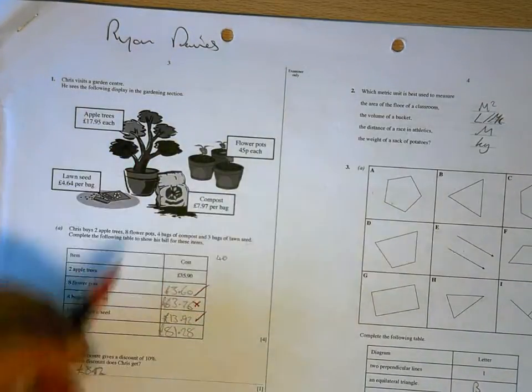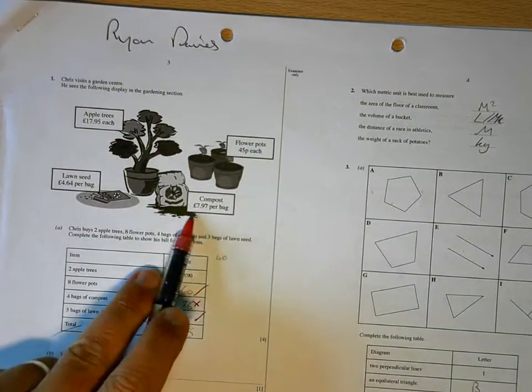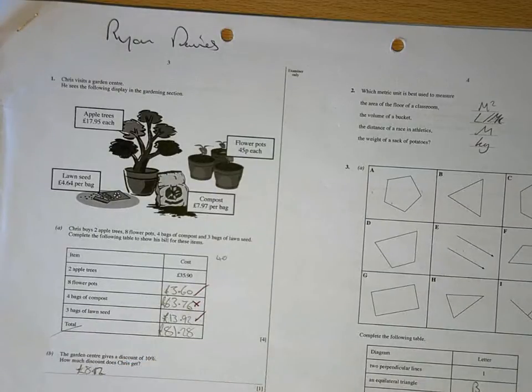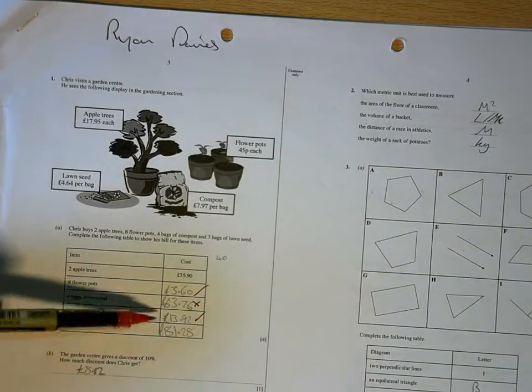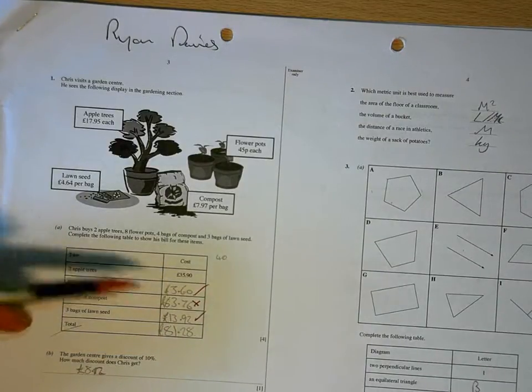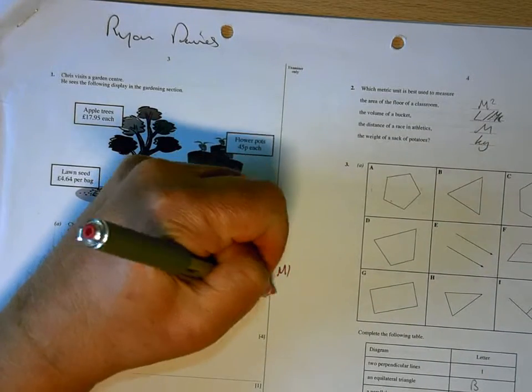That's right, that's not right. I don't know where you got £63.76 from. Compost is £7.97 a bag, so four lots of that isn't going to come to that. And then your total, you haven't added on the £35.90, so that's going to be wrong as well. So you're only going to get two out of four there.